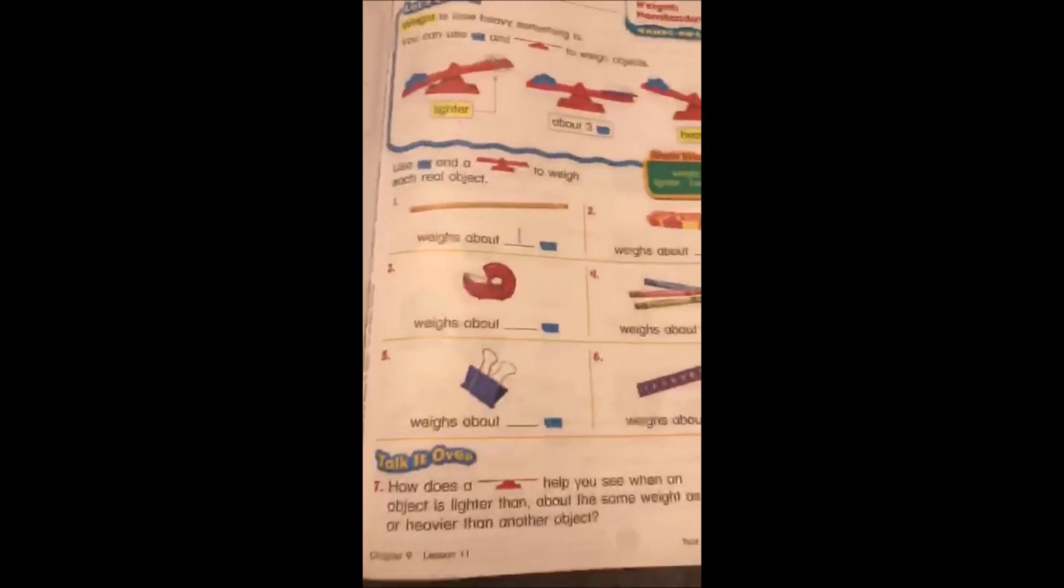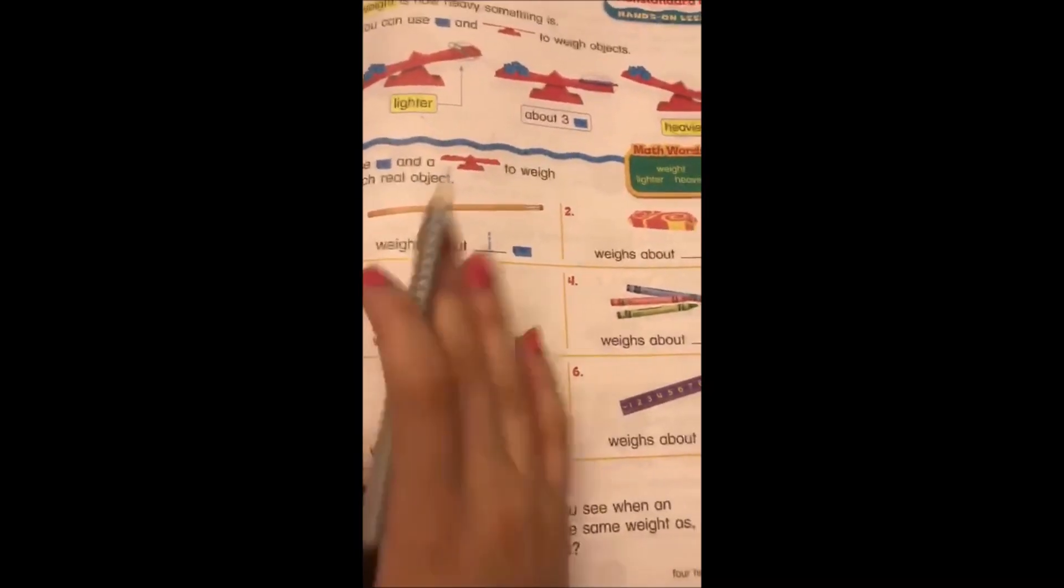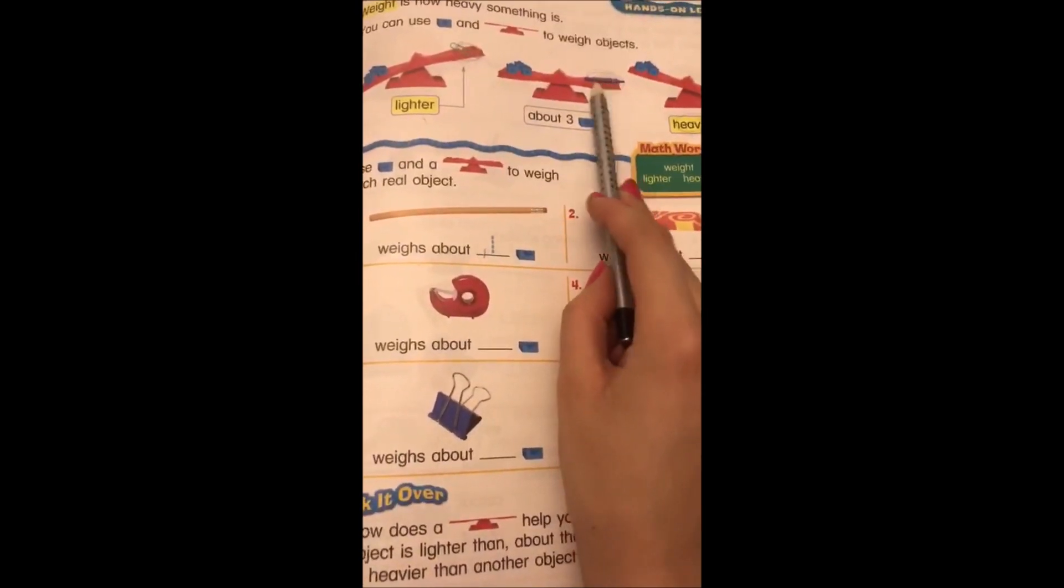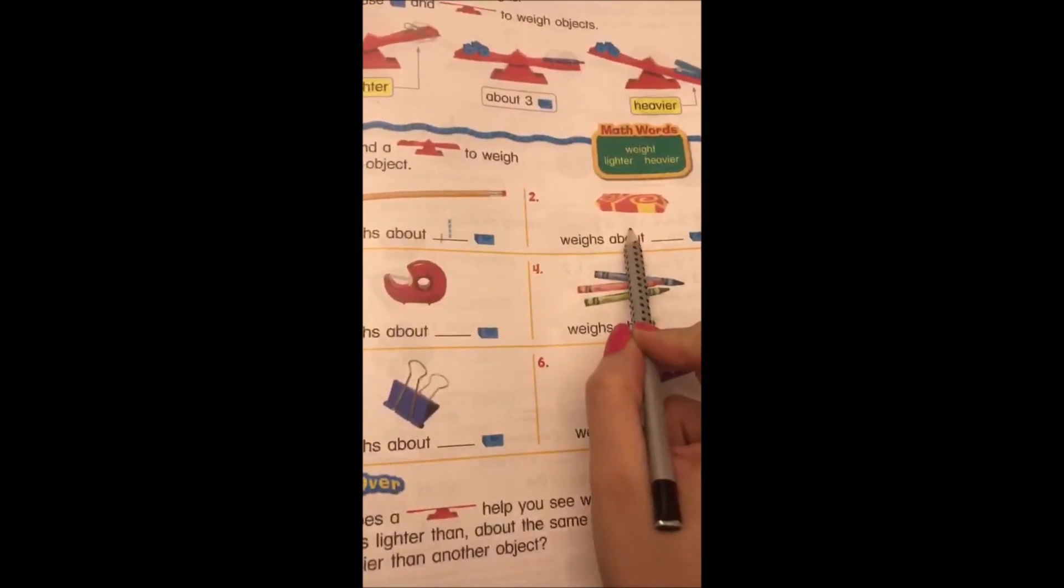It's just like a small game in here. Number one, they said it's about one, which is a pencil, because we can say it looks more like a marker, not less, not more. Now we're going to go to number two.